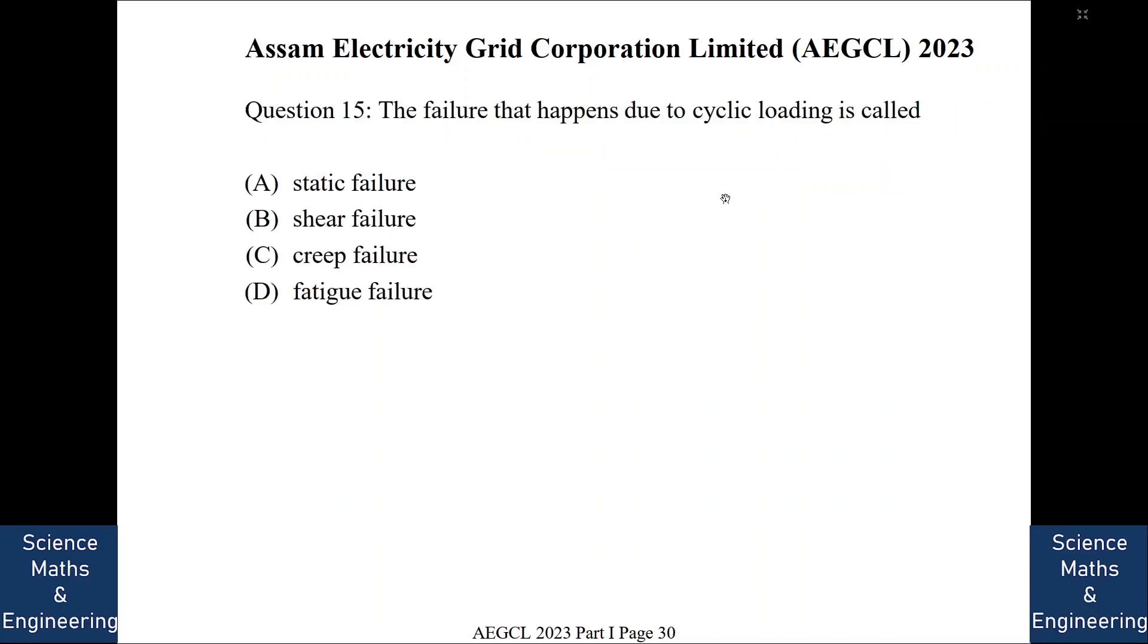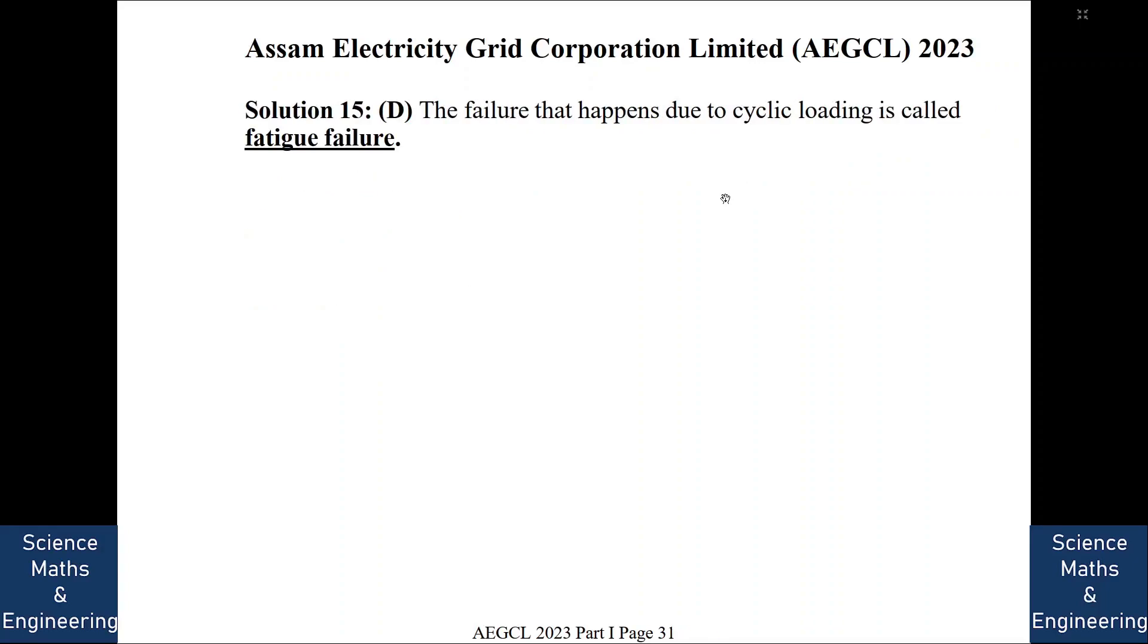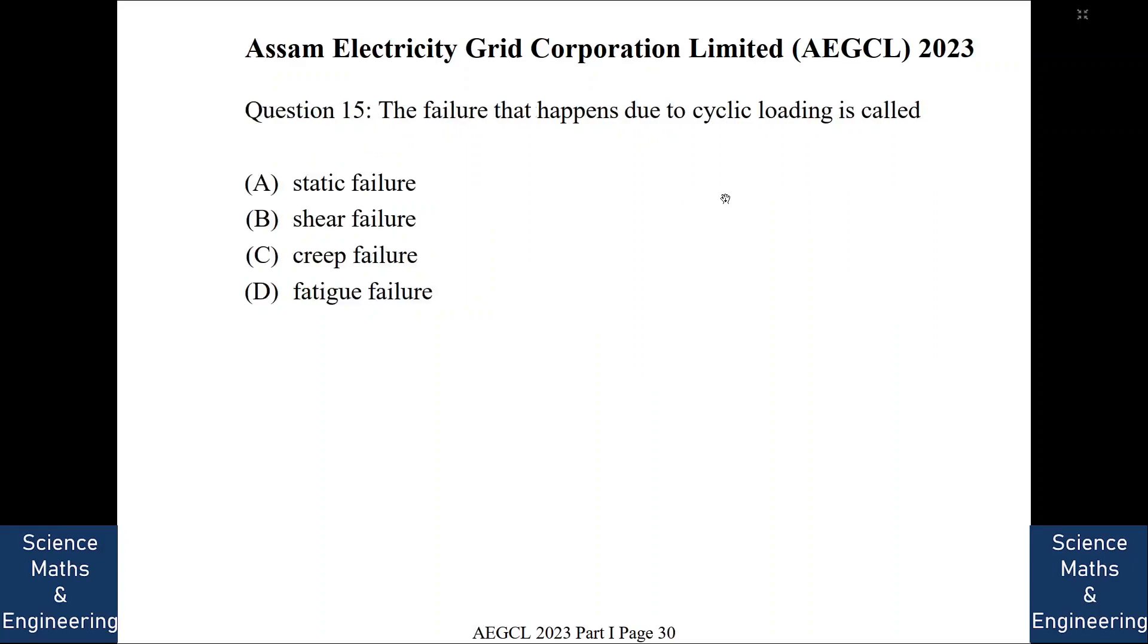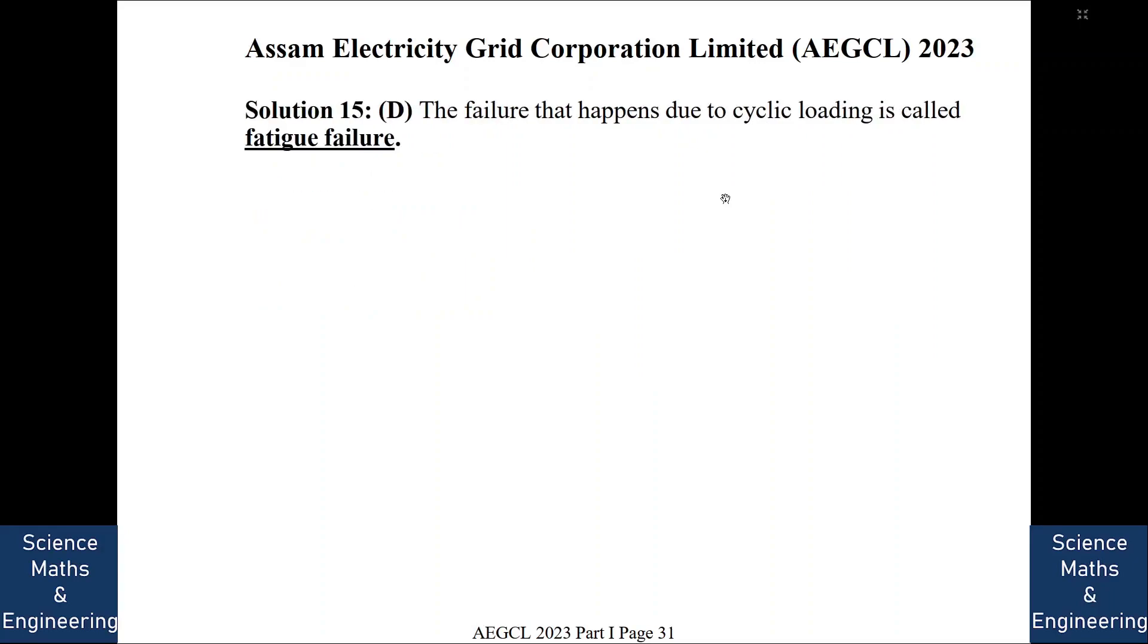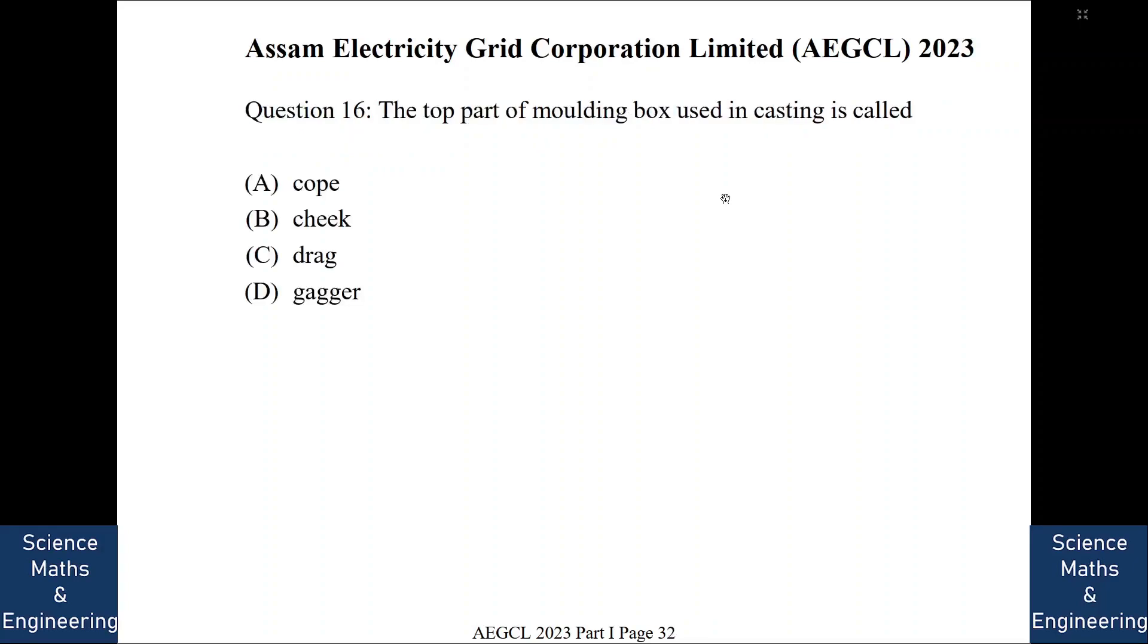The failure that happens due to cyclic loading is called. So it is called fatigue failure. So we will go to the next question. The top part of the molding box used in casting is called. So it is called cope and the lower part is called the drag. We will go to the next question.